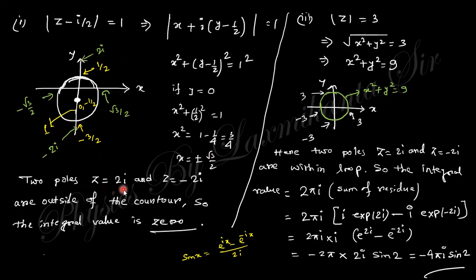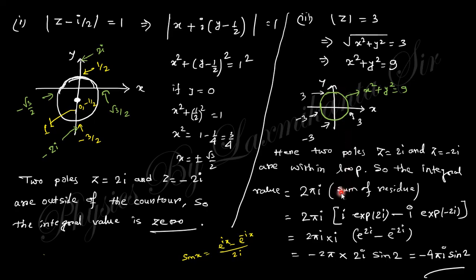Since the points z = 2i and z = −2i are both outside this contour, the integral value is 0. For the second condition |z| = 3, that is x² + y² = 9, the origin is at (0,0) with radius 3, and both poles are within the contour. So using 2πi times the sum of residues and substituting the exponential values, the final answer is −4i·sin(2).